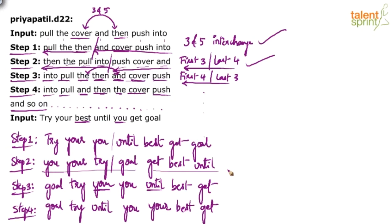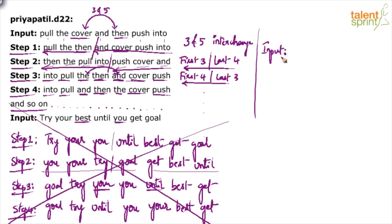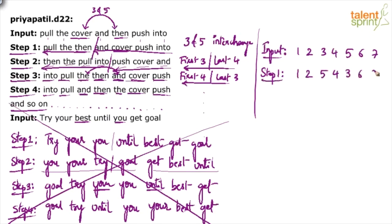Now let me give you a smart method of answering this question. Whenever you have a 'so on' type of question, first understand what changes are being done and then apply the same process to the given input. But is this the best way? No — please do not do this in the exam. Instead of playing with words, just play with numbers. You know there are 7 words, so put 7 numbers: 1, 2, 3, 4, 5, 6, 7. These numbers represent the 7 words in their original positions. In step 1, what do we do? 3 and 5 interchange — so put 1, 2, 5, 4, 3, 6, 7.